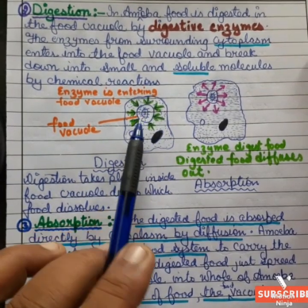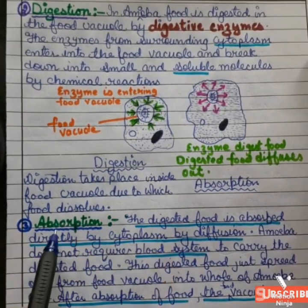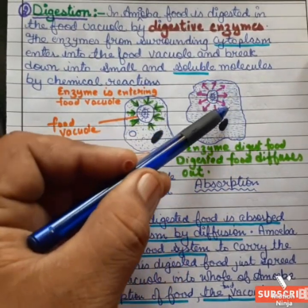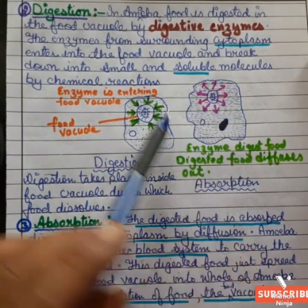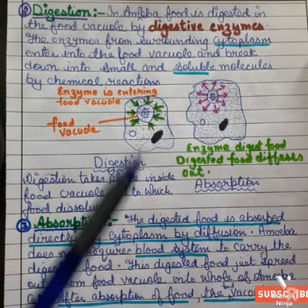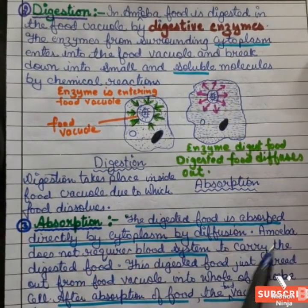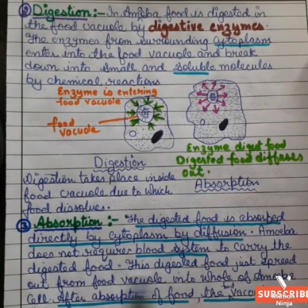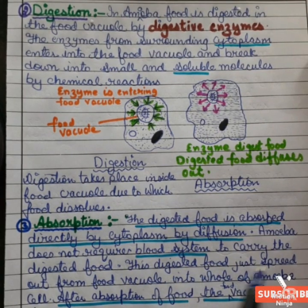After digestion, the next step is absorption. The digested food is absorbed directly by the cytoplasm by the diffusion method. Amoeba does not require a blood system to carry the digested food.